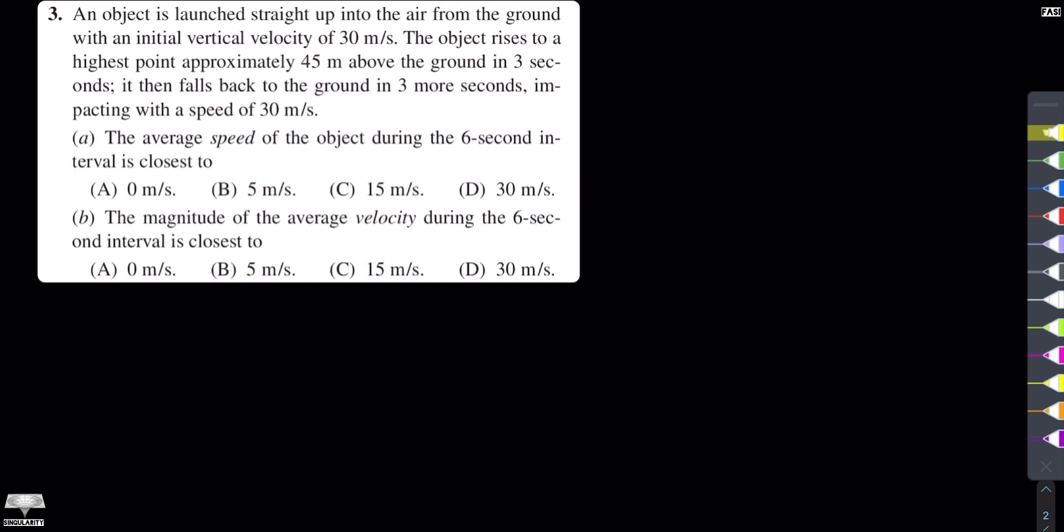When I made theory lectures, I explained that if the object is a round trip, or the point starts to go back to the point, then the average speed is non-zero. And the average speed which we have calculated is total distance covered divided by total time taken.